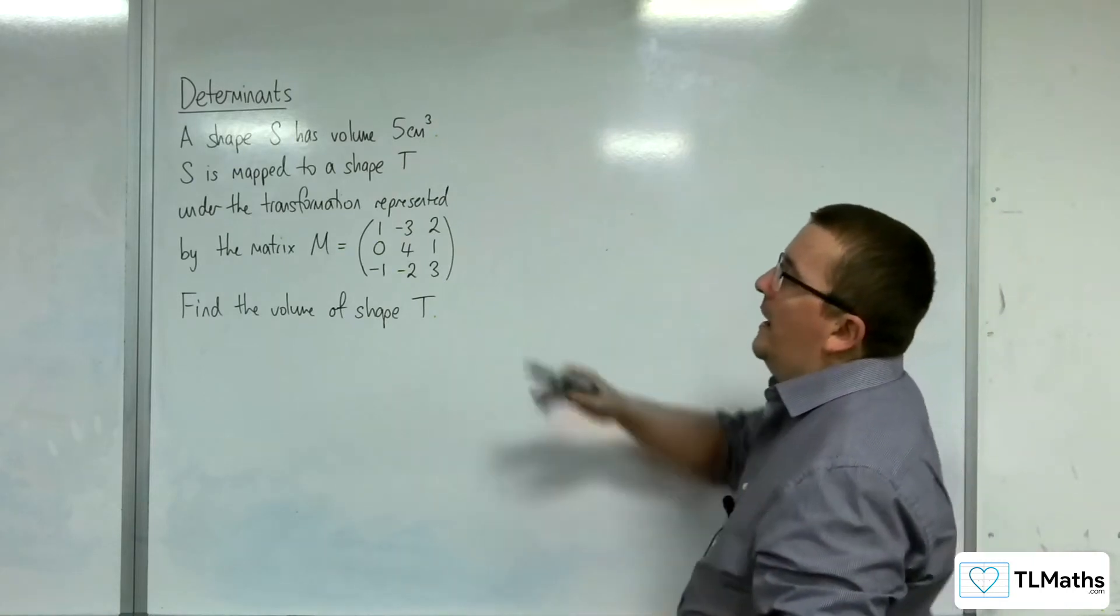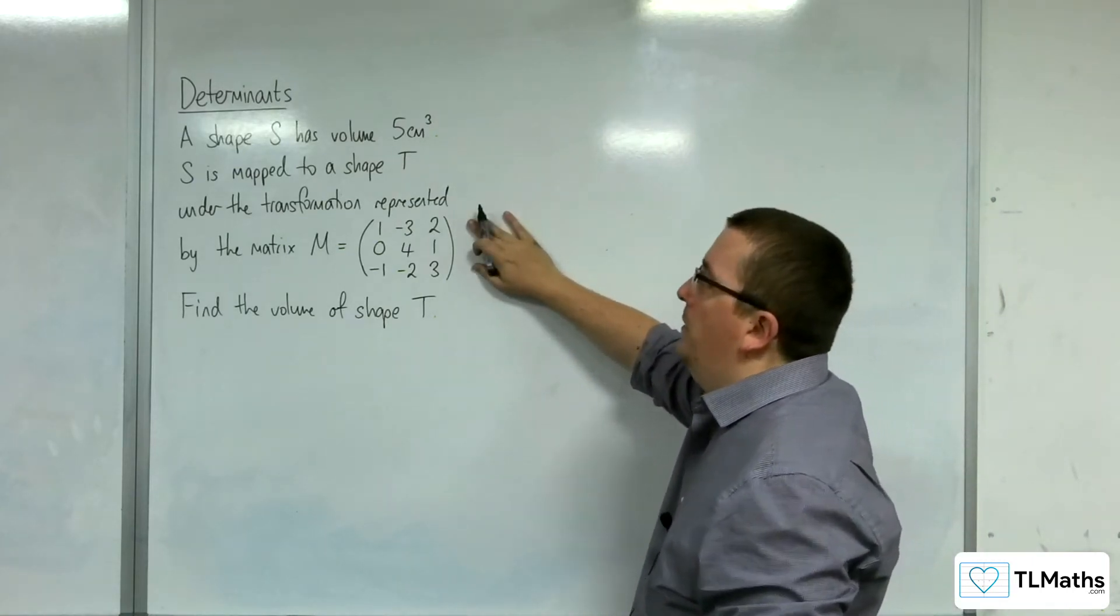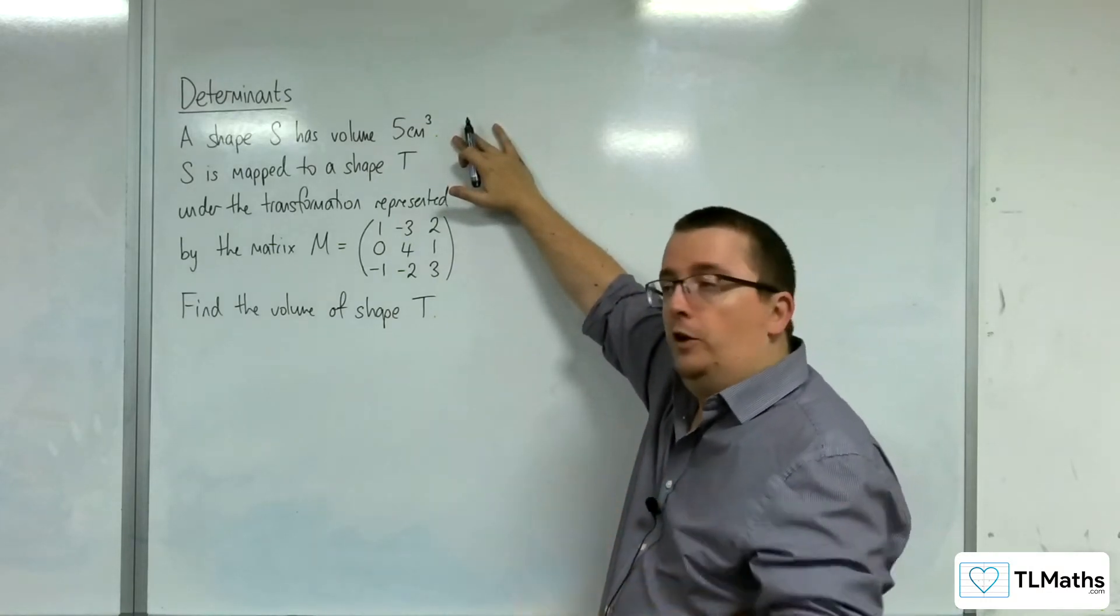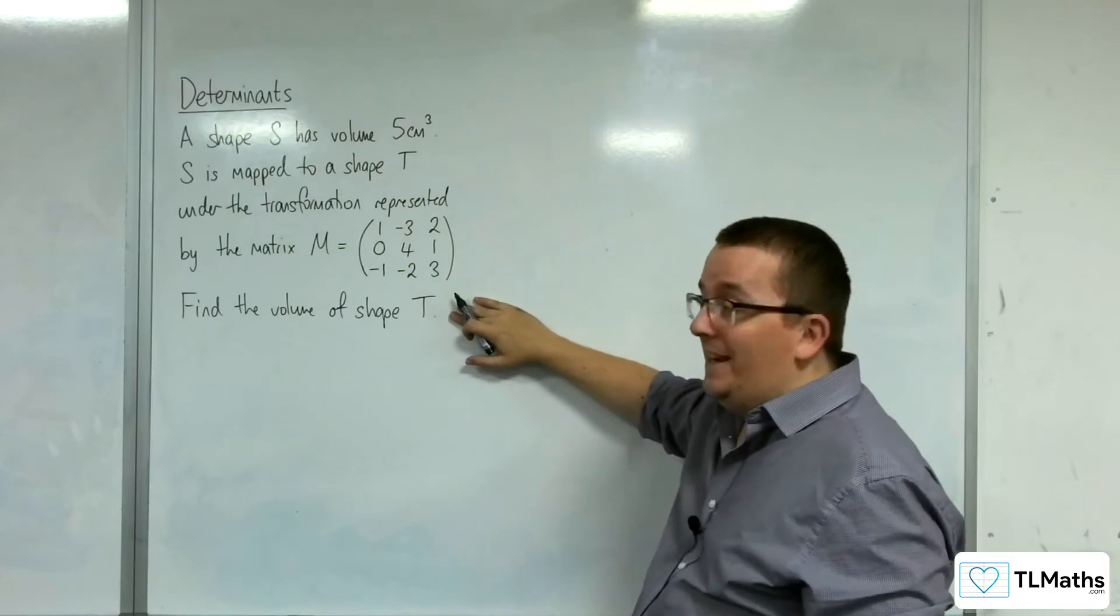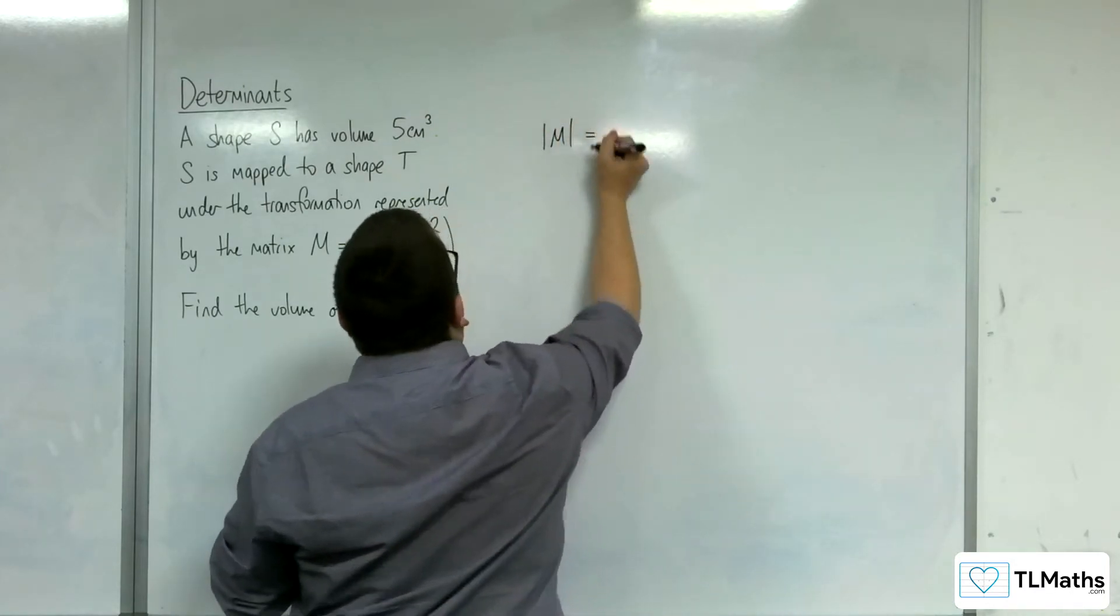So if I work out the determinant of this matrix, then if I multiply that by the 5 centimeters cubed, I have the new volume of the shape T. So I want to find the determinant of M.